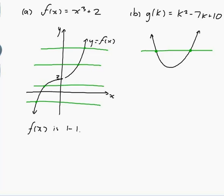Incidentally, a 1 to 1 function is allowed to have horizontal lines that don't cut it at all. You're just not allowed to have ones that cut it twice. This one is most definitely not 1 to 1 because whatever the two k values are, they will have the same g value. So g of k is not 1 to 1.